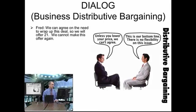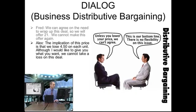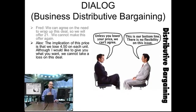Fred says: we can agree on the need to wrap up this deal — so we will offer $21. We cannot make this offer again. So now the price changes to $21 — he is giving in a little bit. And Alex says: the implication of this price is that we lose $450 on each unit. Although I would like to give you what you want, we cannot take a loss on this deal. This is very common — a seller will say, if I sell for this price, I'm going to lose money, this price is too low, it's under my cost. It's a very normal strategy.